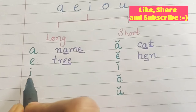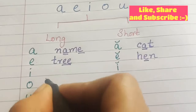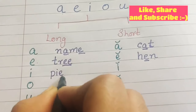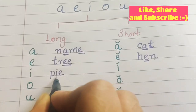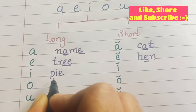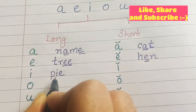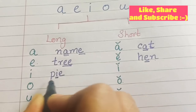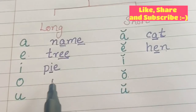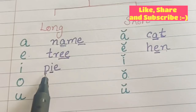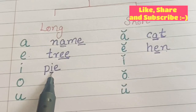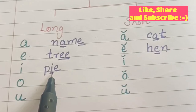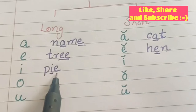Now let's take the example of long I. P-I-E. Again we are having two vowels together, so the first vowel will be the speaking vowel and the second vowel will be silent. Pronounced as P-I, pie. What is the sound we are getting of I? It is the long vowel I sound. Pie.